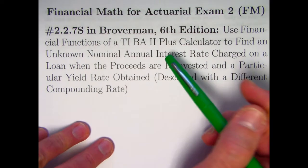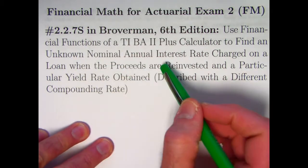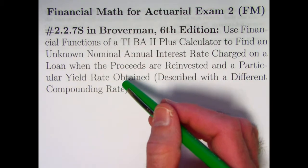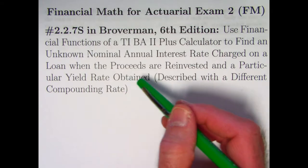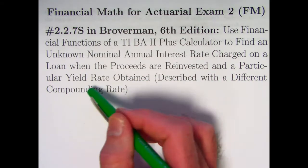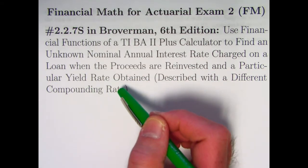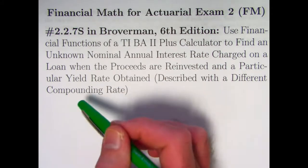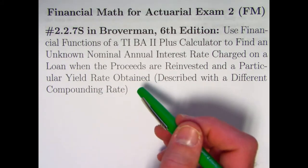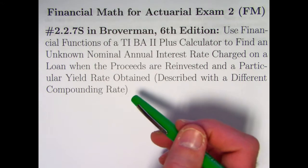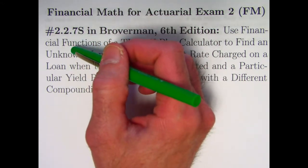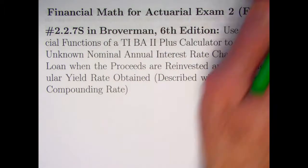We're going beyond ordinary calculator usage to find an unknown nominal annual interest rate charged on a loan, where the proceeds — the payments from the loan — are reinvested and a particular yield rate is obtained. This yield rate is described with a different compounding period than the payments. The payments are monthly; the yield rate is described semi-annually. That's what makes it a problem from section 2.2 of Broverman's book.